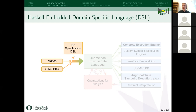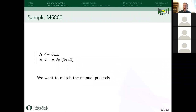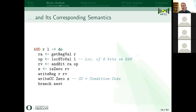Now I'll talk about the domain-specific language in Haskell — we'll call that a DSL from here on out. You use this DSL to specify another assembly language, like the Motorola 6800, which is an ISA from 1974. Here's some code in a pseudo Motorola 6800 language — it simply loads a value into a register and performs a bitwise AND operation with a location in memory. We want to match the manual precisely, and this is what the AND operation looks like: we're reading a location of RAM, getting a register, performing the bitwise AND, writing some condition codes, and branching to next.